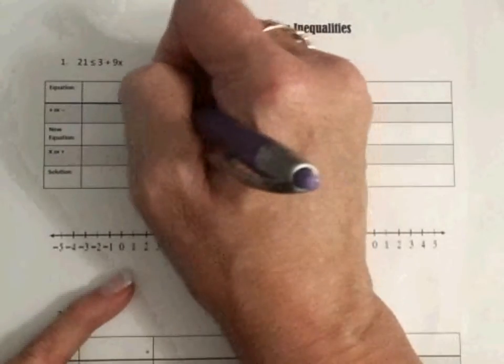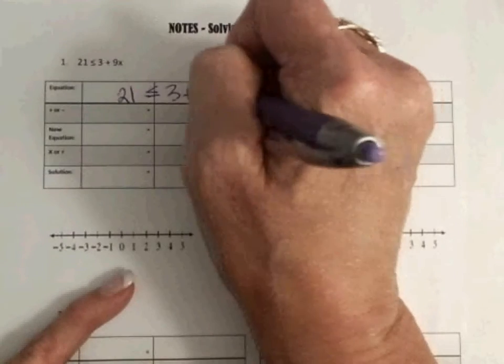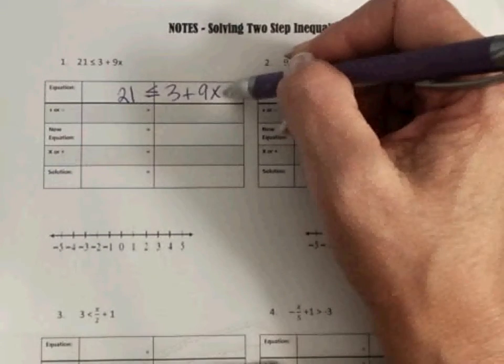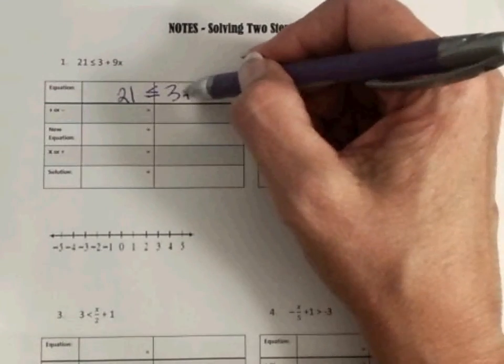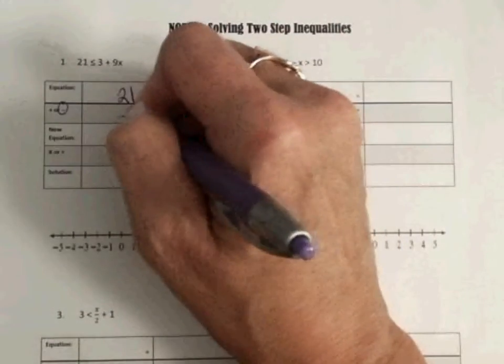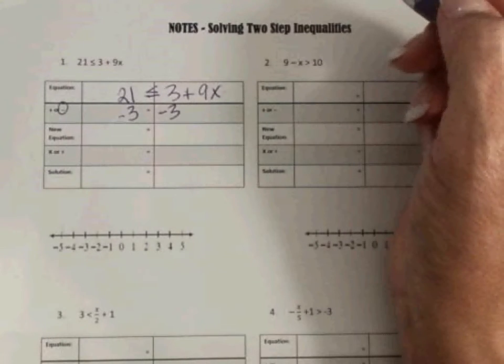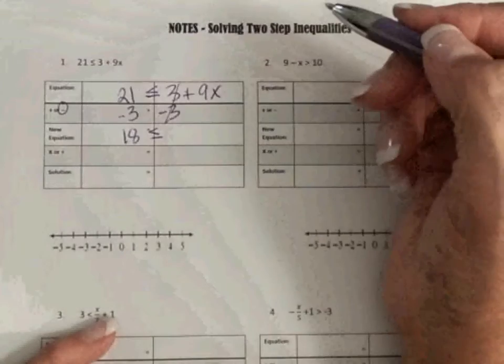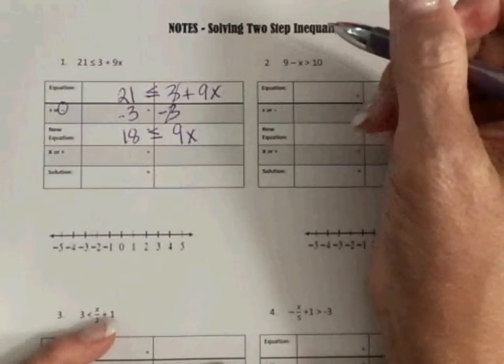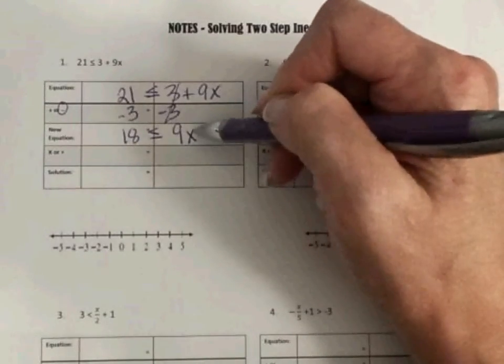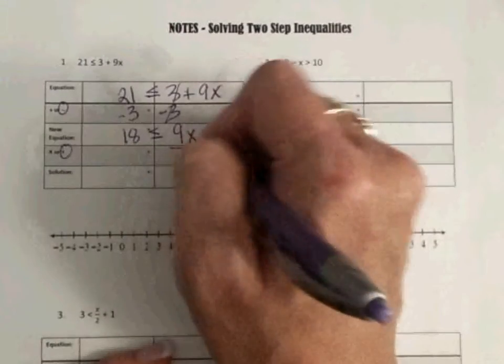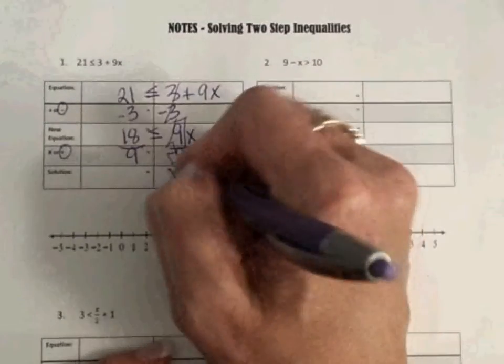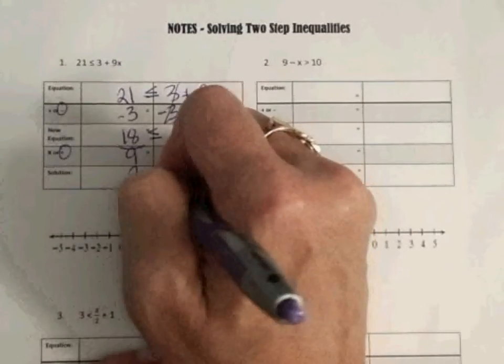So we have 21 is less than or equal to 3 plus 9x. So again, we're solving just like our equations. I want this x by itself, so I want to get rid of this positive 3. They added, that is a positive 3, so we're going to subtract 3 from both sides. Now remember, if you do it to one side, you have to do it to the other side to keep your equation balanced. So 21 minus 3 is 18, less than or equal to, these are 0 pairs, so they go away, 9x. So remember when we talked about if you have a coefficient that's attached to a variable, they multiply. So if they multiply, we're going to divide. We're going to divide both sides by 9. Any number over itself becomes 1. So we have 1x left on this side. 18 divided by 9 is 2. And our sign is still less than or equal to.